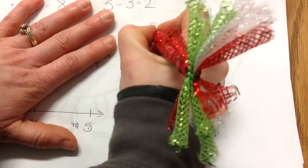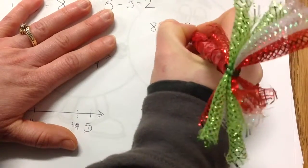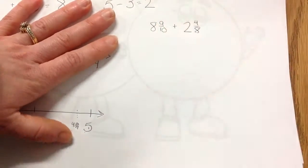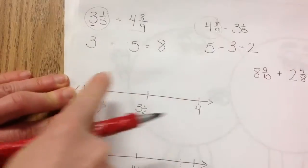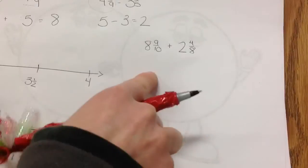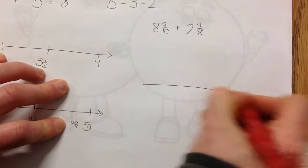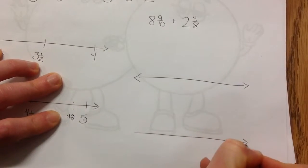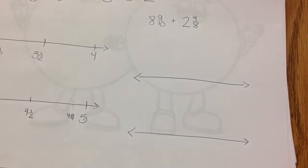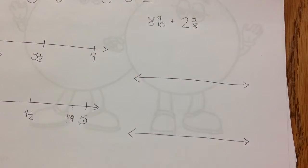When you round them, it helps you make that estimate more clearly. Let's do our next one: eight and nine-tenths plus two and four-eighths. Figure out what eight and nine-tenths rounds to, just like we did before, and the same thing with two and four-eighths. If you need your number lines, use them. If you don't, then don't — but if you get it wrong, you'll want to go back and figure out why. Pause while you do this.